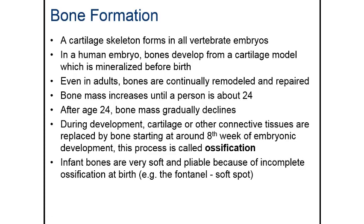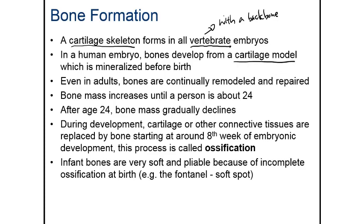As mentioned in the introductory slide, we actually begin as a cartilage skeleton, and that's common for all vertebrate embryos. Vertebrates are basically anything with a backbone — not just humans, but also animals like dogs. In humans, bones form from the cartilage model in a process that begins before birth but continues to happen even after birth.